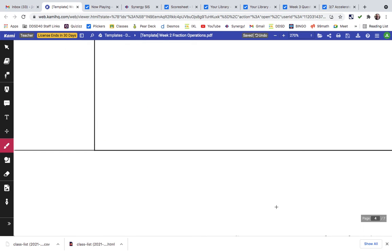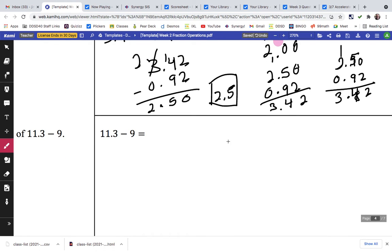And let's do one more, 11.3 minus 9. Notice that there's 11.3 minus 9, and there's no decimal point here, so what do we do? We put one right there, and just put a 0, that way we can line them up.